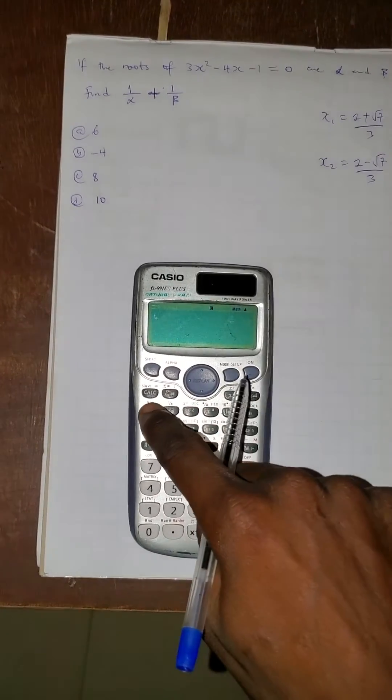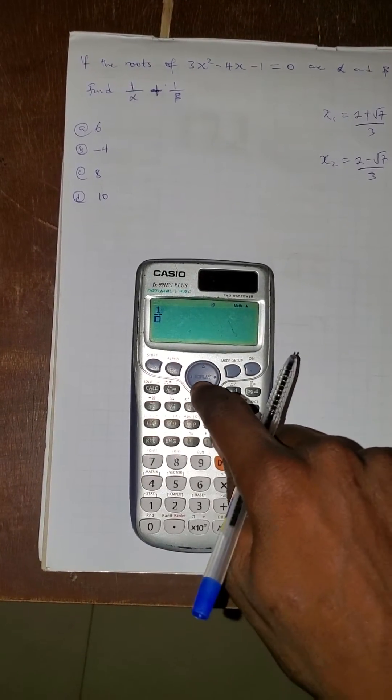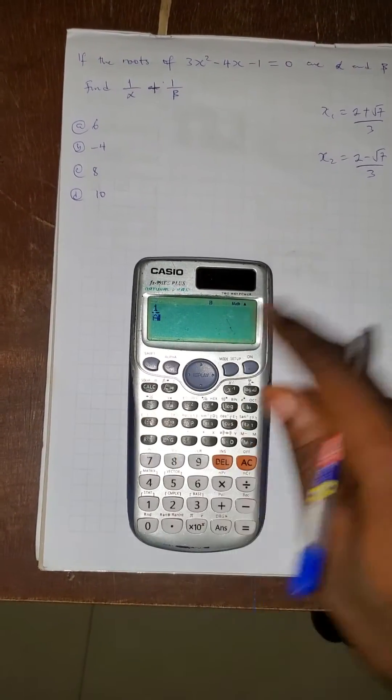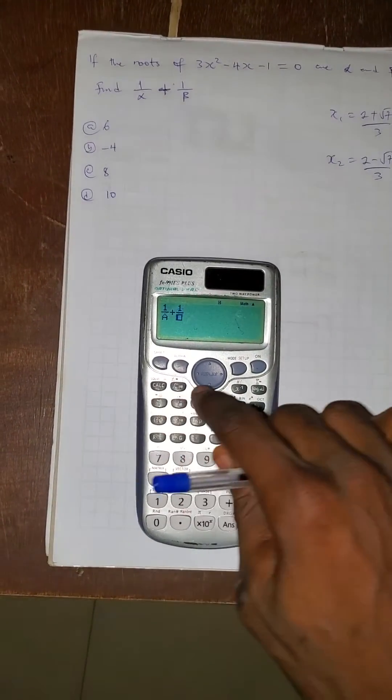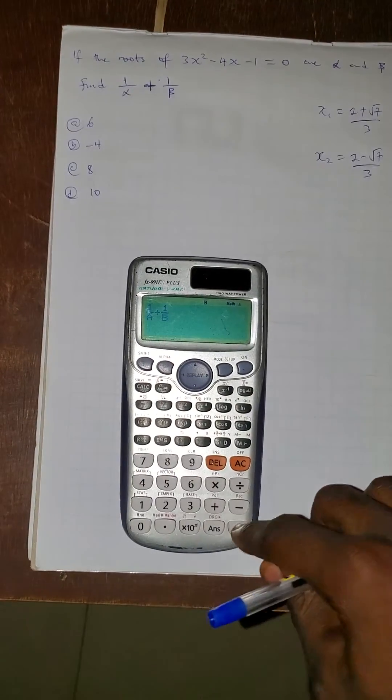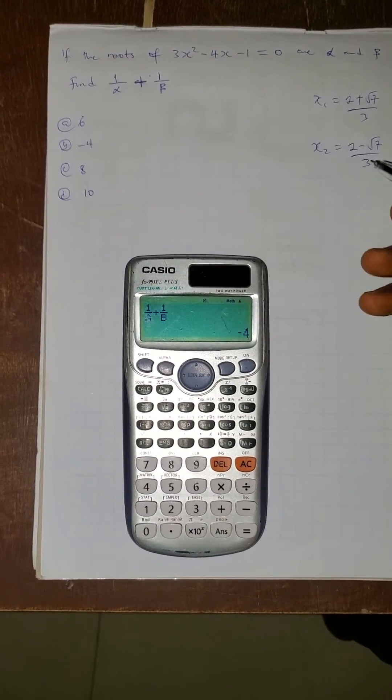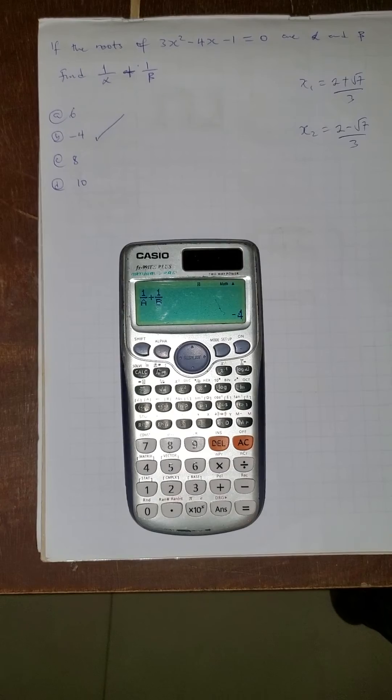After we've saved this, we now press the question, which is 1 all over alpha A. The first one is alpha A, then plus 1 over alpha B. Don't forget the second one. So press equals to. The answer is minus 4. So that's why the answer is minus 4.